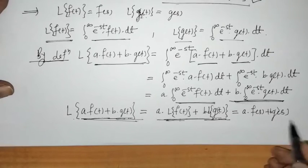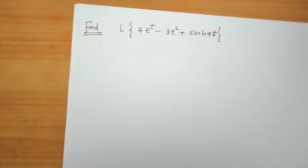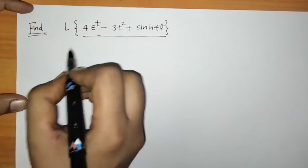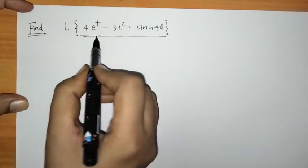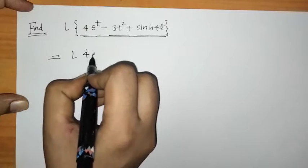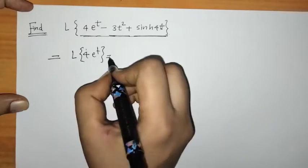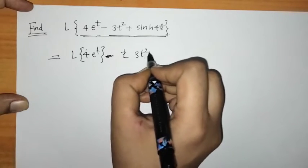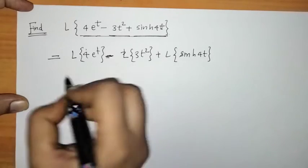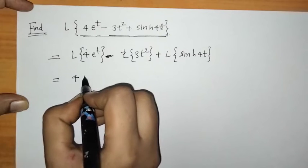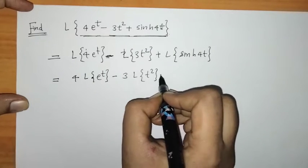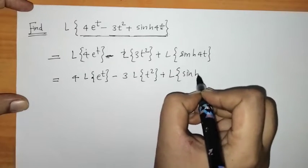Now let's take an example to illustrate the linearity property. Suppose we need to find the Laplace of a combination of functions. By the linearity property, we operate the Laplace separately on each term: Laplace of e^(−4t) minus Laplace of 3t² plus Laplace of sinh(4t). Constants 4 and 3 can be taken outside their respective integrals, giving us 4·L{e^(−t)} minus 3·L{t²} plus L{sinh(4t)}.